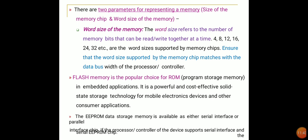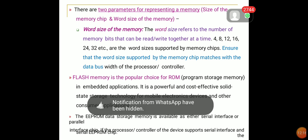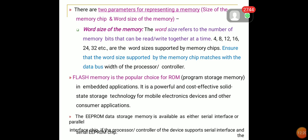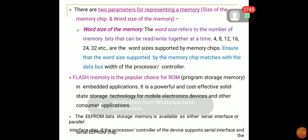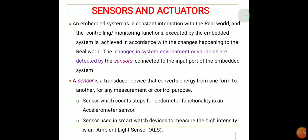Two parameters represent a memory chip: size and word size. Word sizes include 4, 8, 12, 16, 24, 32 bits, etc. Flash memory is the popular choice for program storage in embedded applications — it is a powerful and cost-effective solid-state storage technology for mobile and consumer electronics. EEPROM data storage memory is available as either serial or parallel interface chips, selected based on whether the processor supports serial interface.